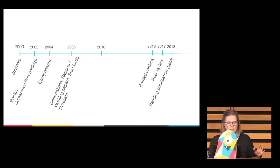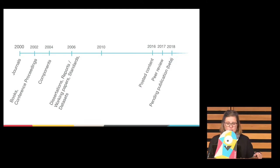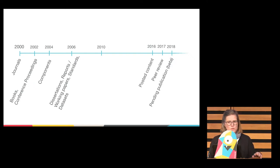CrossRef started in 2000 with journal articles, quickly added books and conference proceedings in 2002, then components, dissertations, reports, standards, and datasets in 2006. Those are considered more traditional forms of publications.